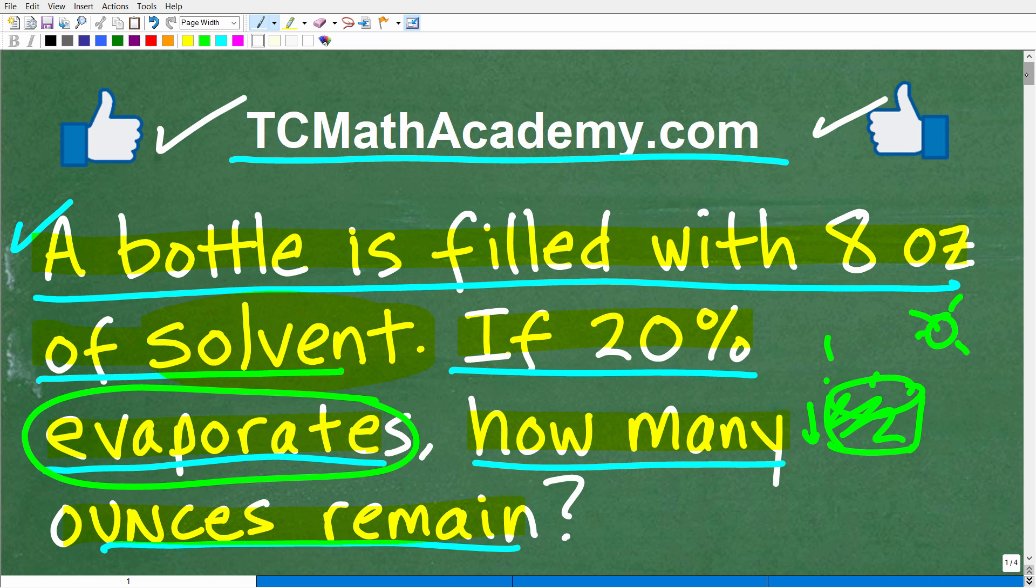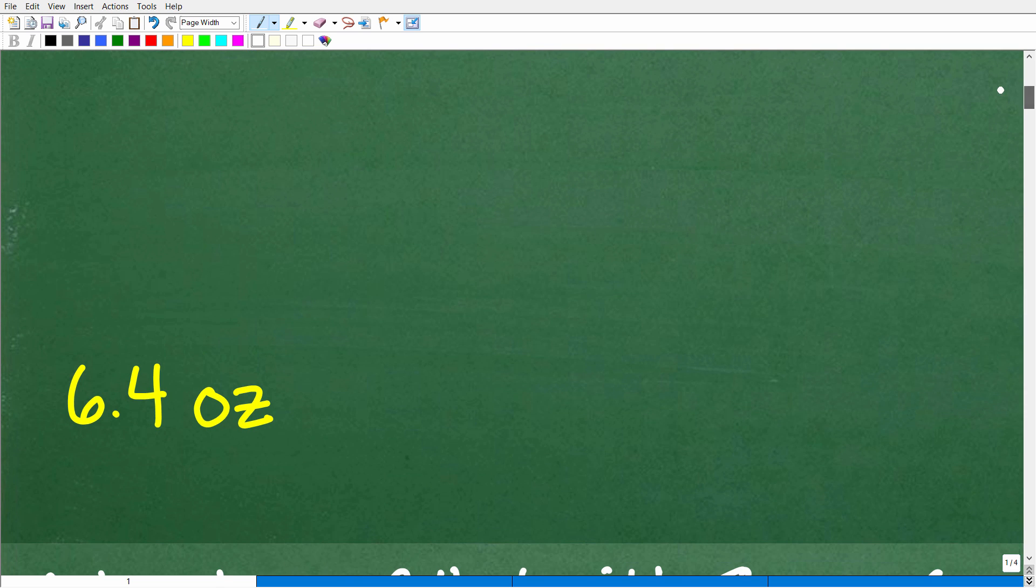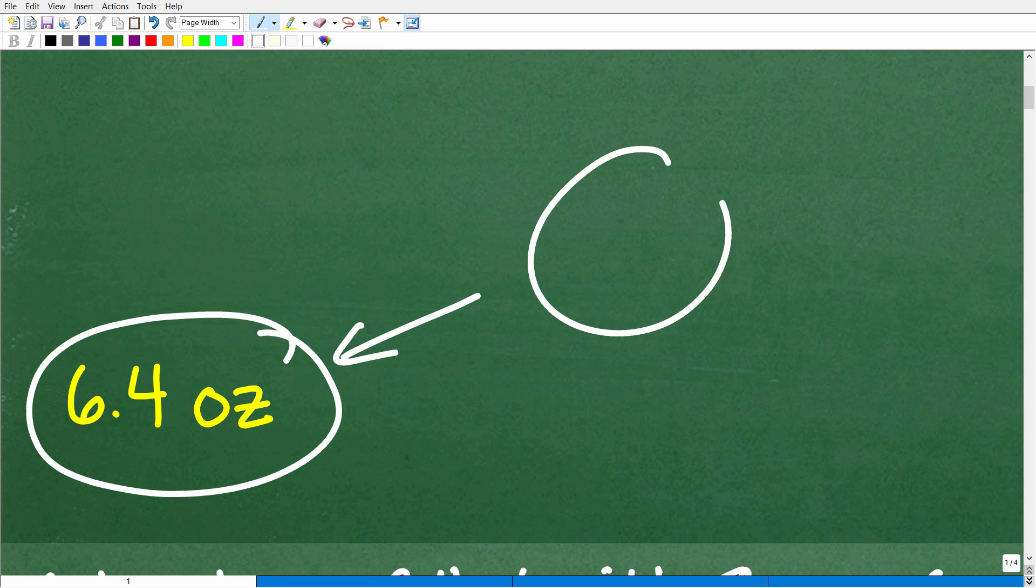It's like if we had water out here, and here is the sun, and this bucket of water over time is going to decrease because the water is going to evaporate. Well, that's what's going on here with this solvent. So if 20% of this solvent evaporates, how many ounces remain? Well, let's go ahead and see the answer. The correct answer is 6.4 ounces.